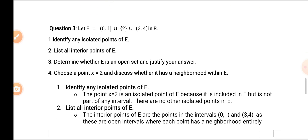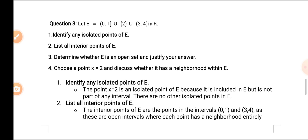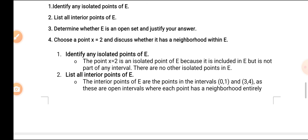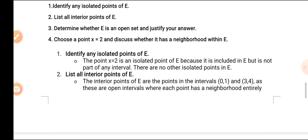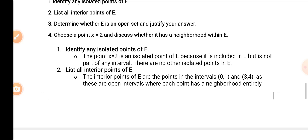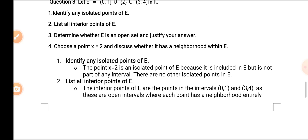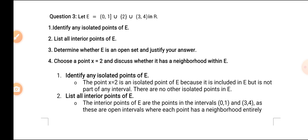Question No. 3: given E = {0,1} ∪ {2} ∪ {3,4}, identify any isolated points of E, list all interior points of E, determine whether E is an open set, and justify your answer. Then, for the fourth part, choose a point x = 2 and discuss whether it has a neighborhood within E. First part: the point x = 2 is an isolated point of E because it is contained in E but is not part of any interval.